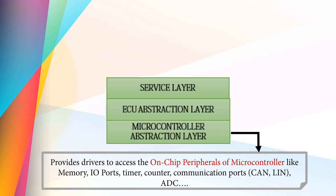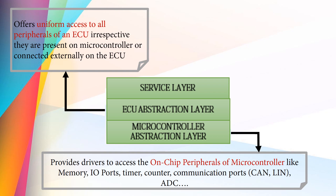It abstracts the underlying architecture of the microcontroller from the above layers and makes them independent of it. The job of the ECU abstraction layer is to abstract and provide the implementation for onboard devices. It offers uniform access to all peripherals of an ECU, irrespective of whether they are present on the microcontroller or connected externally on the ECU.